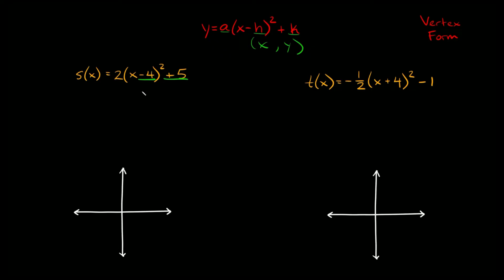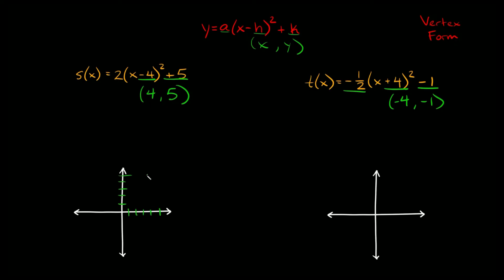For example, s of x equals 2 times x minus 4 squared plus 5. We have a positive 2, so it opens upward and is a little skinny. We see negative 4 and positive 5 — taking the opposite sign of the h gives the vertex at positive 4 comma positive 5. For t of x equals negative 1 half times x plus 4 squared minus 1, it opens downward and is fat, and the vertex is at negative 4 comma negative 1.